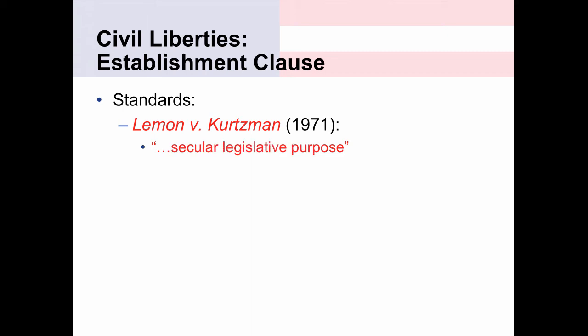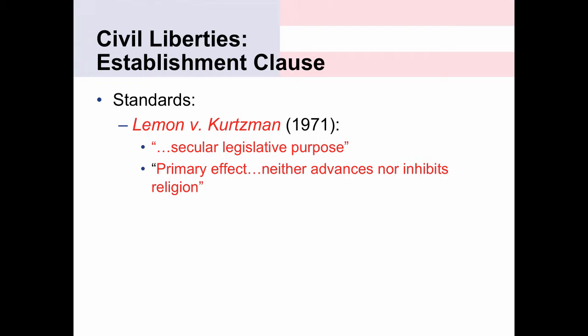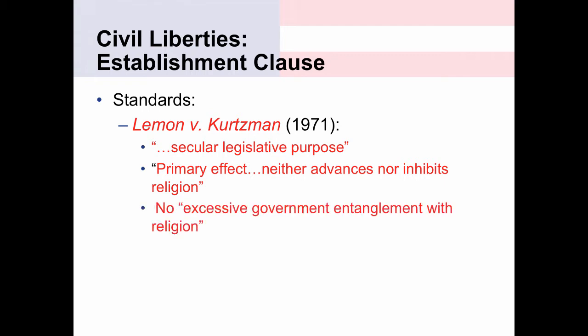The first part is that all laws have to have a secular legislative purpose. The purpose of legislation cannot be to promote religion; it must be secular in nature. The second is that all laws have to have the primary effect of neither advancing nor inhibiting religion. The third part, and the part that becomes the most controversial, is that laws cannot have a, quote, excessive government entanglement with religion. The first part is fairly straightforward and clear. The second part also fairly clear.